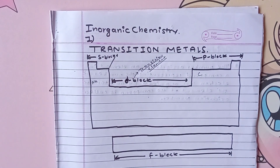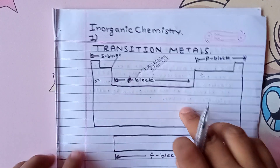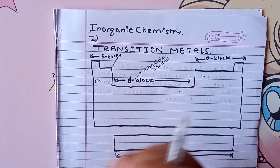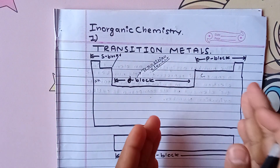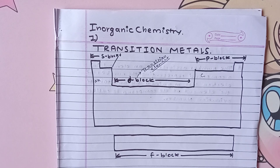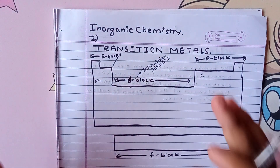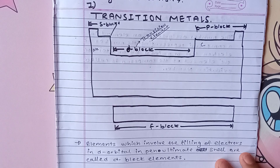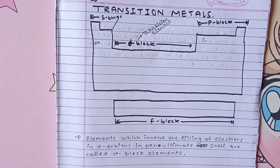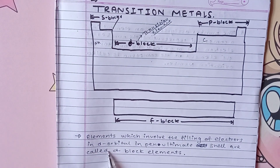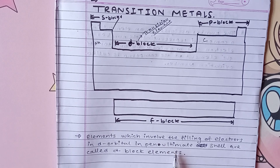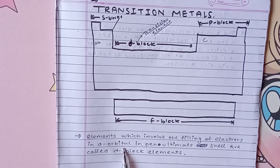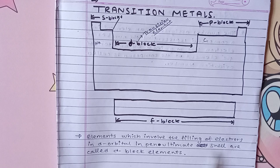This is the D-block. This involves ionic compounds and covalent compounds. This is the transition element. This is the definition: the transition element is the element which involves the filling of electrons in d orbitals in the penultimate shell.